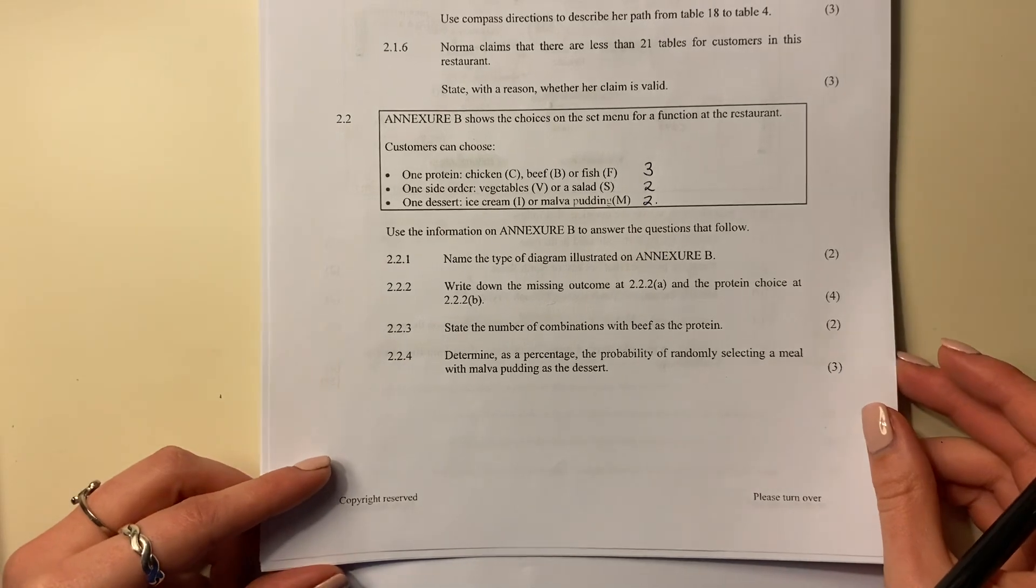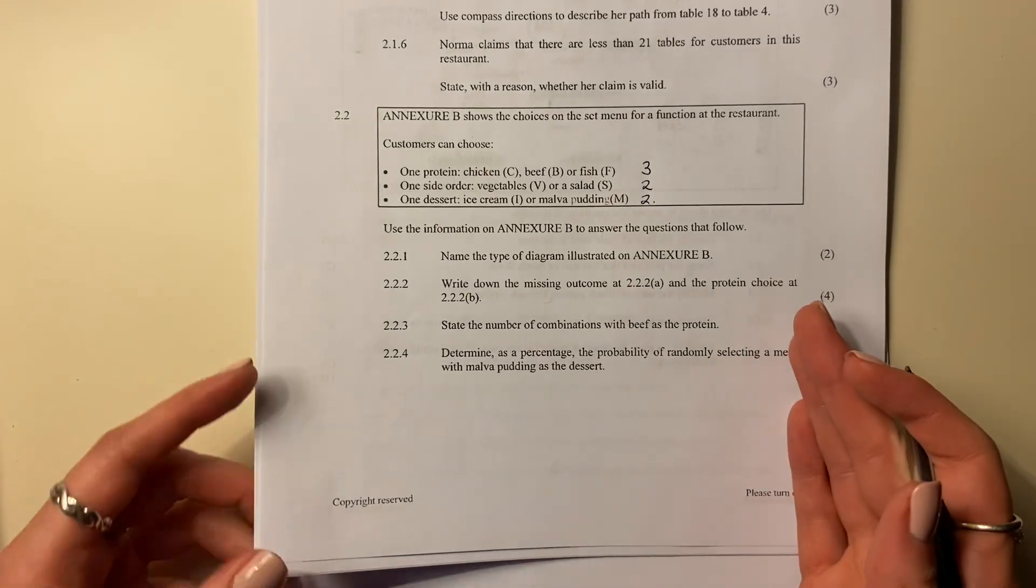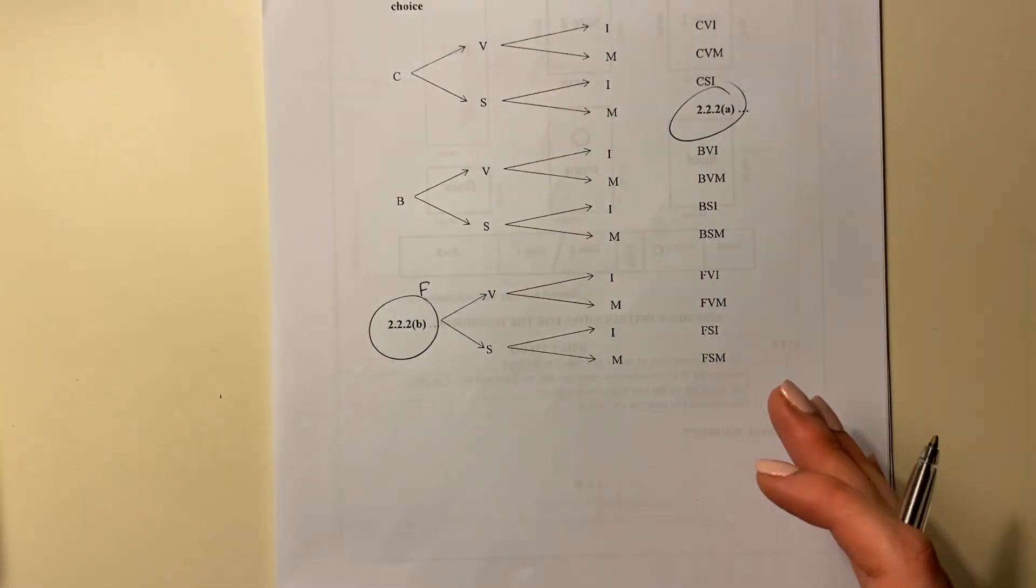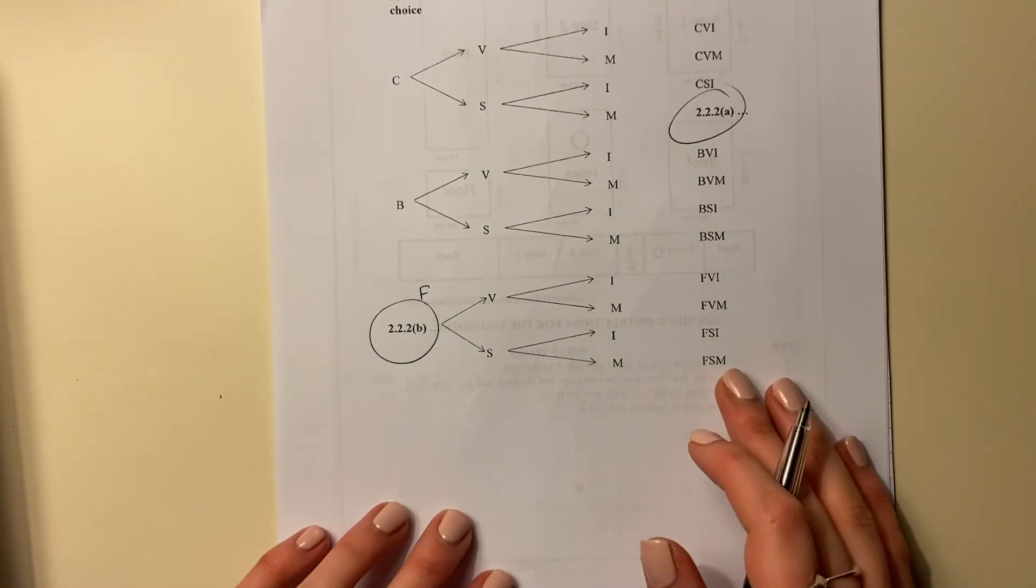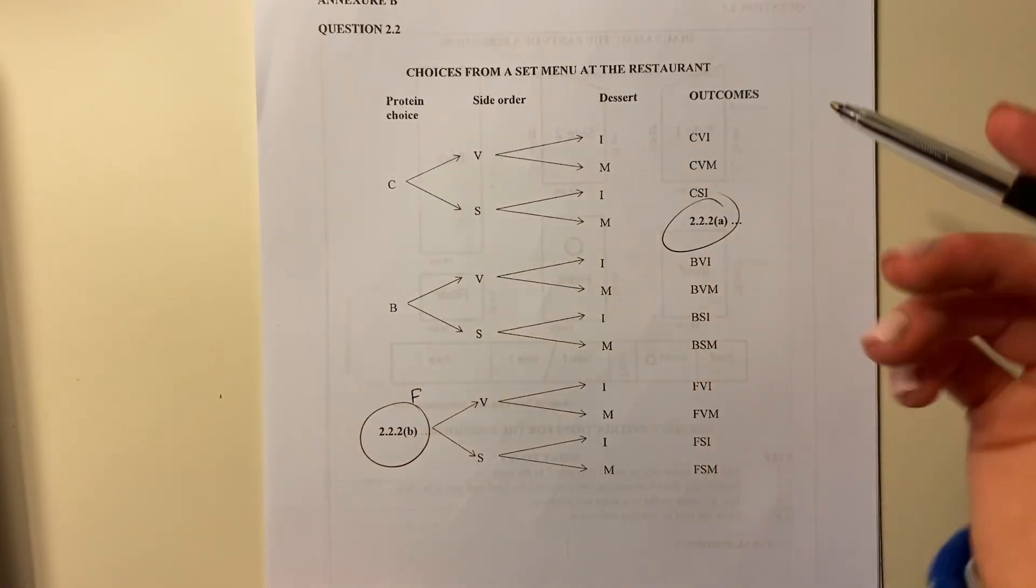2.2.3. State the number of combinations with beef as the protein. Okay, how many combinations do we have? Now, what students want to say is they want to say, oh, there's only two combinations. No, no, no.